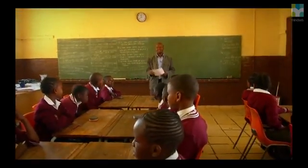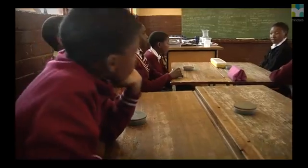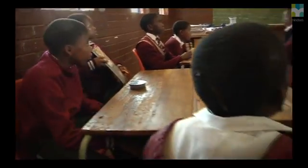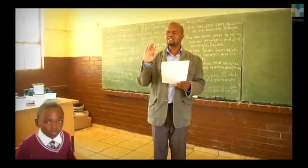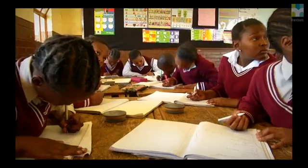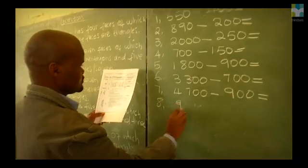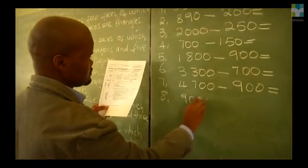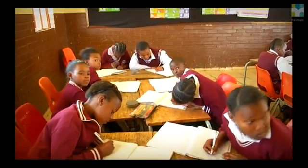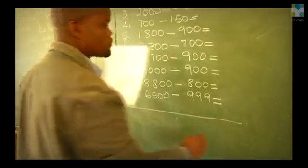Welcome class. Can you all take out your books so that we can do the mental test? It's only seven to ten minutes. The time constraint teaches these learners to be quicker, because there is a problem regarding multiplication, addition and subtraction. So we check that learners can do that in a given time.